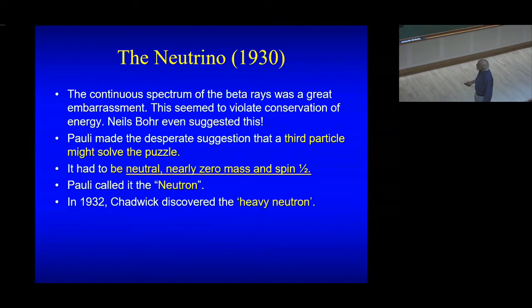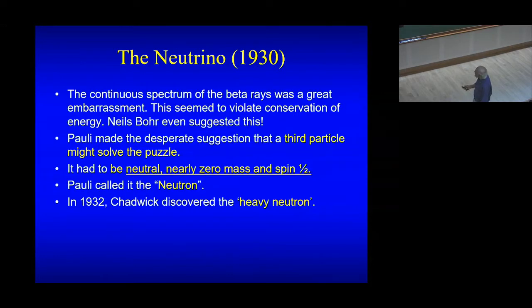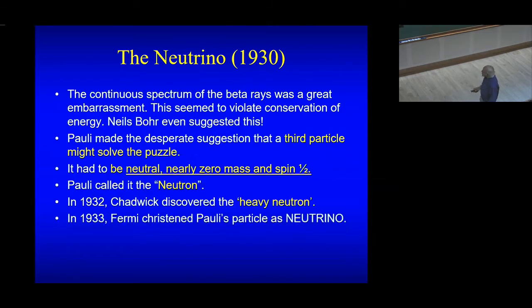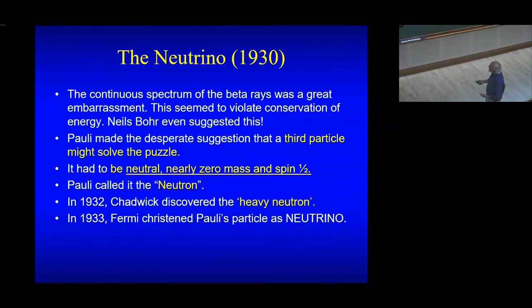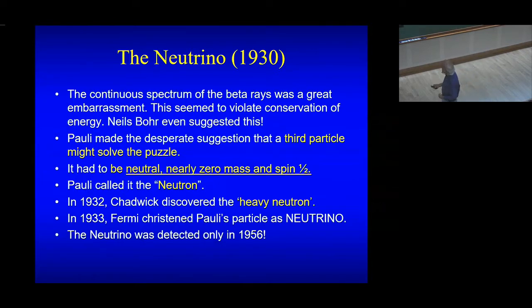In 1932, Chadwick discovered the heavy neutron. Chadwick was another student of Rutherford. It became very clear instantly that the neutral particle Chadwick had detected couldn't be the neutral particle Pauli had conjectured, because this particle had a mass very nearly equal to the mass of the proton. In 1933, when Fermi gave the theory of beta decay — one of the greatest achievements of theoretical physics in the last century — he christened Pauli's particle as the neutrino. In Italian, it means the little neutron. The neutrino was detected only in 1956, so there was a long gap between 1930 when Pauli conjectured it and 1956 when it was finally detected.